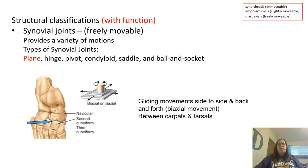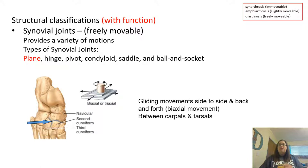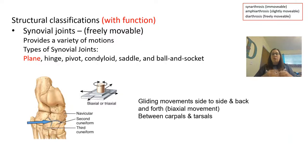Synovial joints are the freely movable joints that provide a variety of motions. There are different types: plane, hinge, pivot, condyloid, saddle, and ball and socket. A plane synovial joint allows for gliding movements — side to side and back and forth — so it has biaxial movement. This occurs between the carpals of your wrist and the tarsals of your ankle, allowing for sliding, though not a huge amount of movement because they are closely packed together.